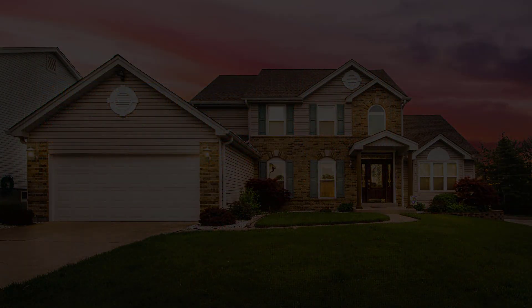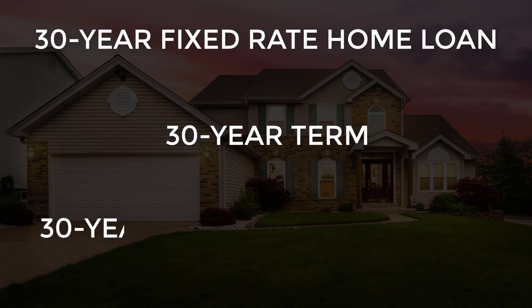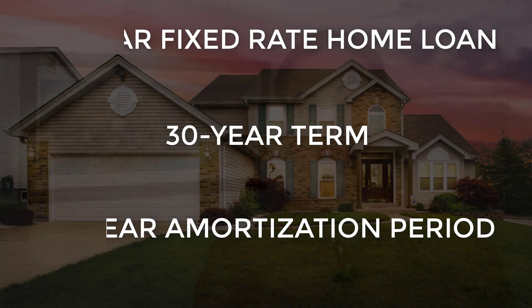Now in a 30-year fixed rate mortgage on your house, generally what you'll see is a 30-year term and a 30-year amortization or payback period. Meaning that the loan term is 30 years so you don't have to pay back the loan principal balance in full until that 30-year period is up, and you'll also pay back your loan on a 30-year payback schedule.